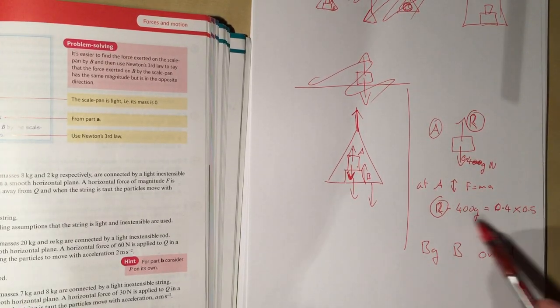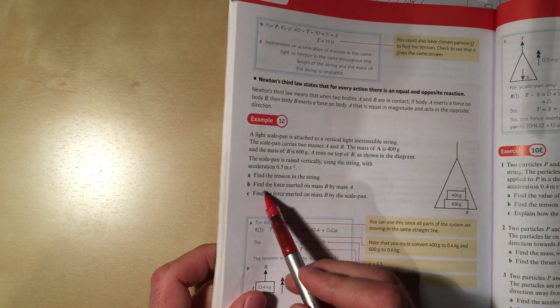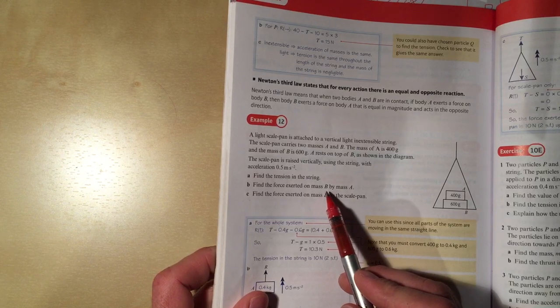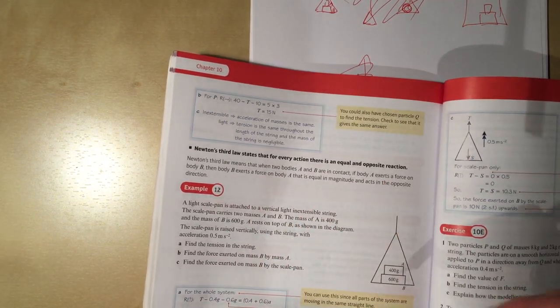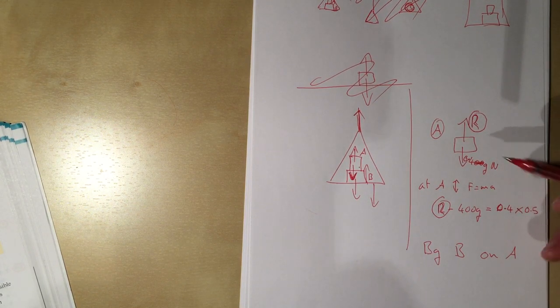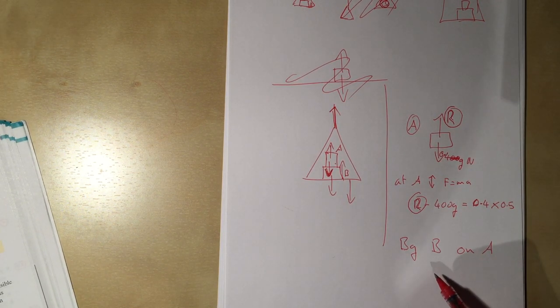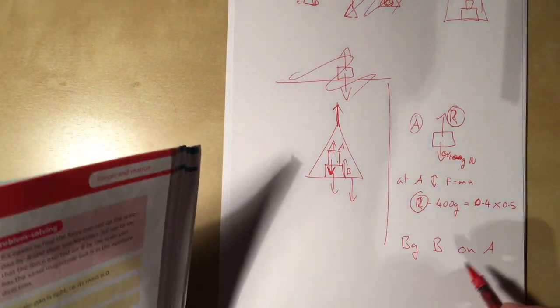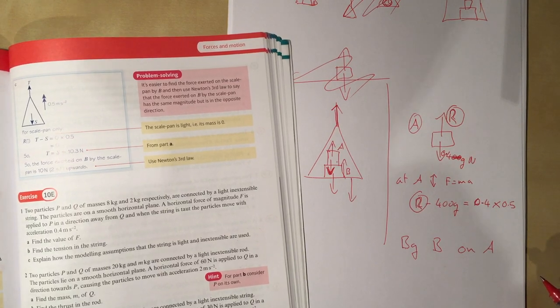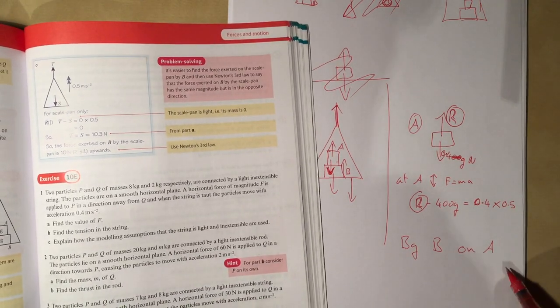I can deal with the forces on A, and that one equation gives me one of the pieces of information not given in the question. The problem is, part B asks for the force exerted on B by A — not by B on A; it's the other way around. This is where Newton's third law comes in: for every action there's an equal and opposite reaction. So if B is pushing up on A with a force R, then A is pushing down on B with a force R. Once we've found R, that's our answer to part B. The force exerted by B on A is the same as the force exerted by A on B because of Newton's third law.